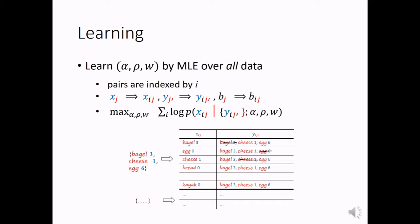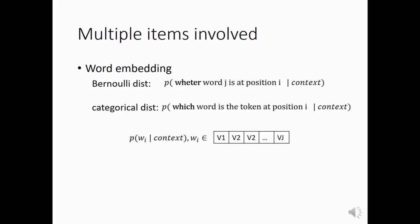Sometimes, there are multiple items involved on the left side of this conditional probability. For example, word embedding with categorical distribution. If we compare word embedding with Bernoulli distribution and categorical distribution: for Bernoulli distribution, essentially we want to predict whether a word j is at position i. So, this binary variable here is about word j only. This is covered by our previous model.